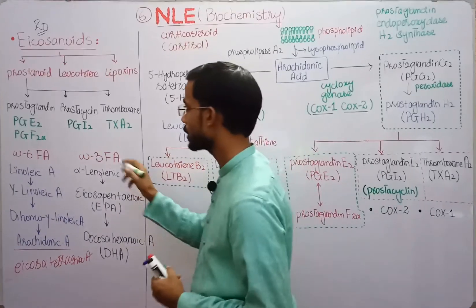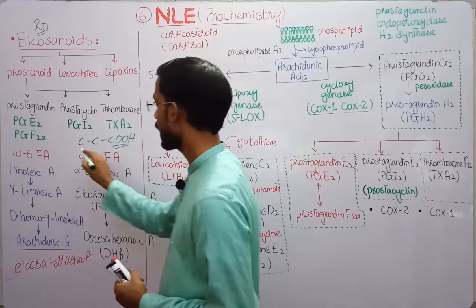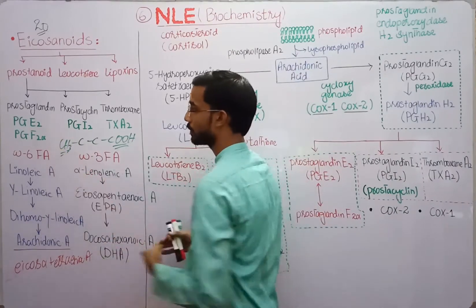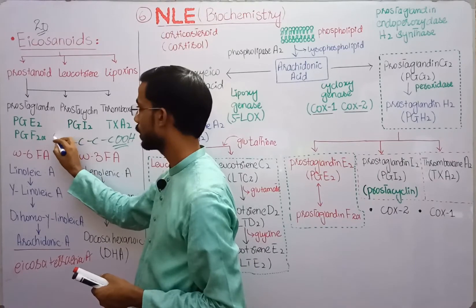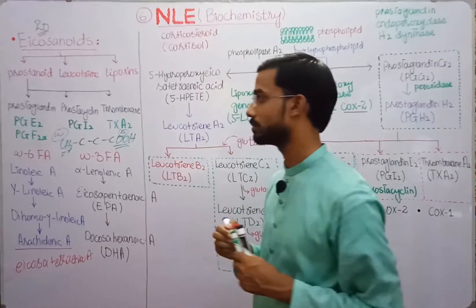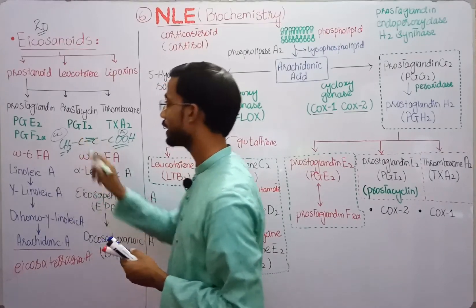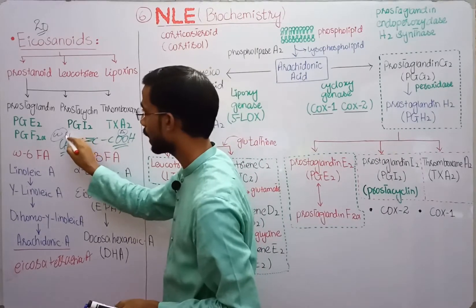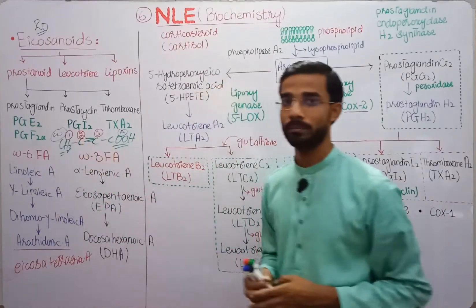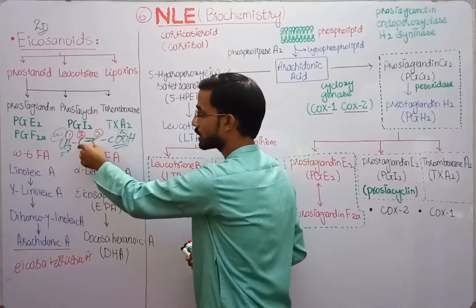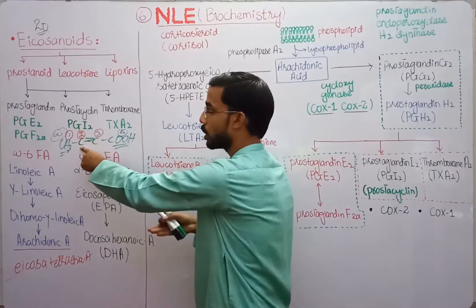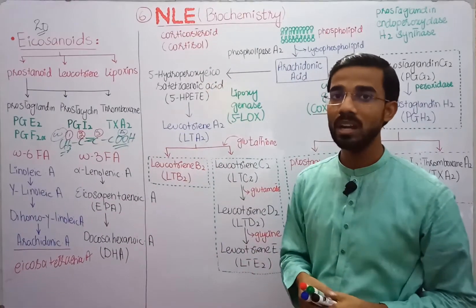Omega means: as you know, this is the Carboxyl group and this is the Methyl group. If we count the carbon number from the Methyl group, then we consider it Omega. But if we count from the Carboxyl group, then we consider it Delta. For example, if there is a double bond and we count 1 carbon, 2 carbon, 3 carbon, and the bond forms between the 2nd and 3rd carbon, we consider only the 1st carbon which comes first. So this is called an Omega-2 fatty acid.